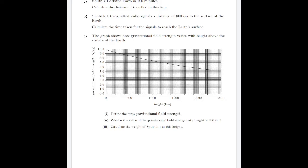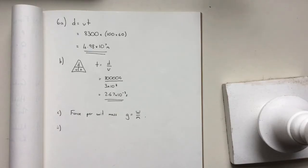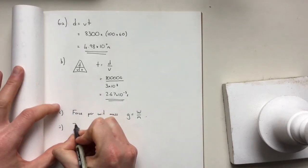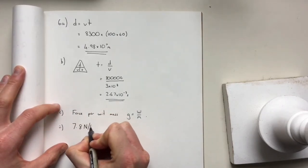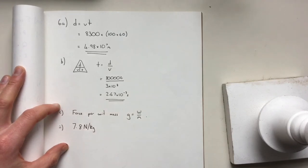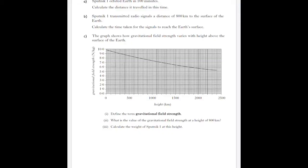For part two, what is the value of the gravitational field strength at a height of 800 kilometers? Looking at the graph, we can see that at 800 kilometers, we go all the way up to the line and then across. You should be careful with the axes and labels, but each box represents 0.2. This one should be 7.8 newtons per kilogram.